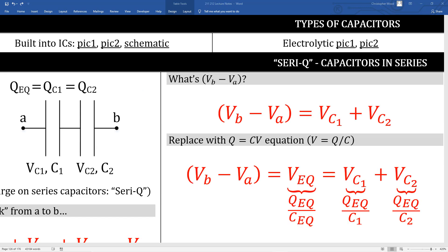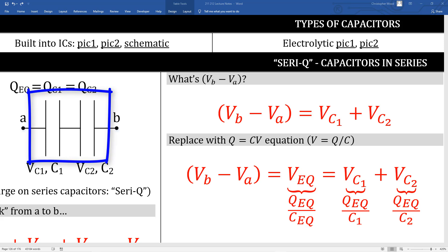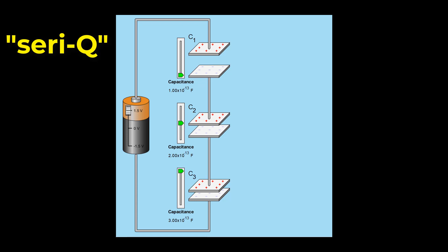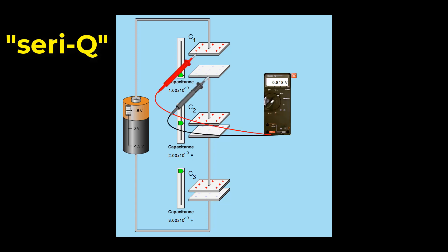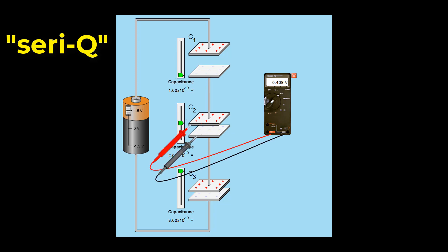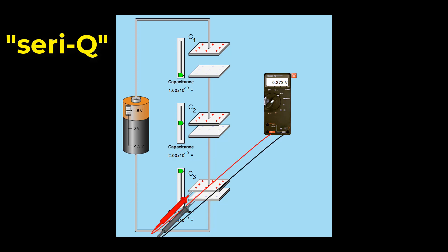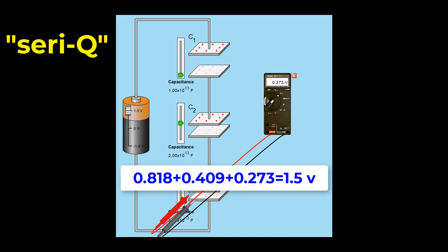Next section: capacitors in series. The picture on the left shows two capacitors connected in series. The schematic symbol shows a capacitor as two parallel lines to represent the parallel plates. If you connect two or more capacitors in series, they blend together to provide an aggregate capacitance. Let's talk about the acronym SERI-Q, which means capacitors in series carry the same charge. Here you're looking at three different capacitors connected in series — they all have different capacitance values and different voltage drops: C1 has 0.818 volts, C2 has 0.409 volts, and C3 has 0.273 volts, which add up to 1.5 volts.